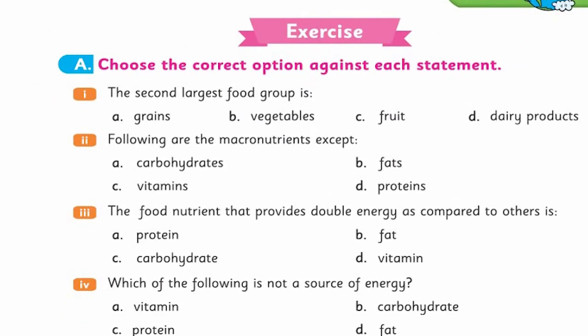Now it's important for all of us to solve this exercise. Choose the correct option against each statement. The second largest food group - first largest is grains, second largest could be vegetables, fruits, or dairy products. Check that.